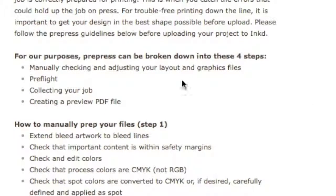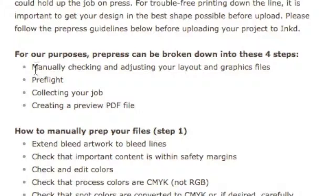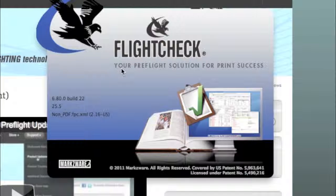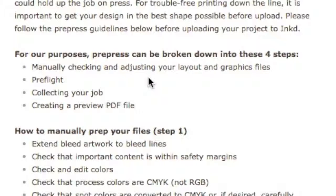First, you'll see a quick overview of the four steps to getting a file prepress ready. Step one is manually checking and adjusting your layout and graphics files in Adobe, Quark, or Microsoft-type layout applications. Step two is to preflight your file, preferably with a standalone tool such as Markzware's FlightCheck, which will check all major layout types in DTP or desktop publishing.